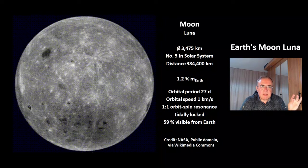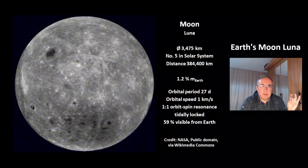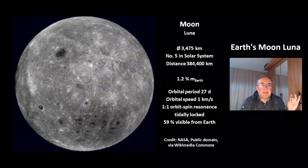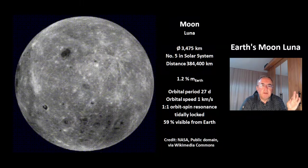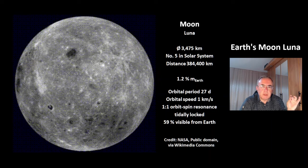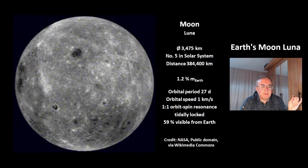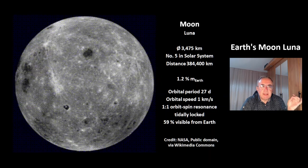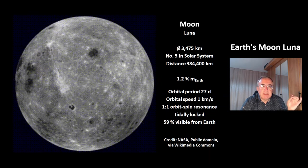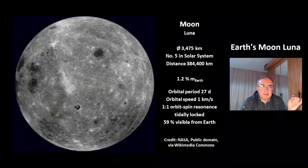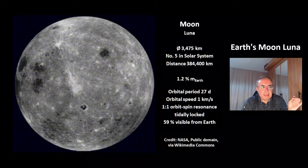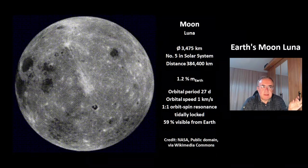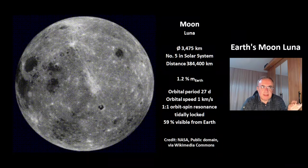The Moon is at a distance of 384,400 km and has a mass of 1.2% of Earth's mass. Its orbital period is 27 days, orbital speed is 1 km per second, and there is a 1-to-1 orbital spin resonance.